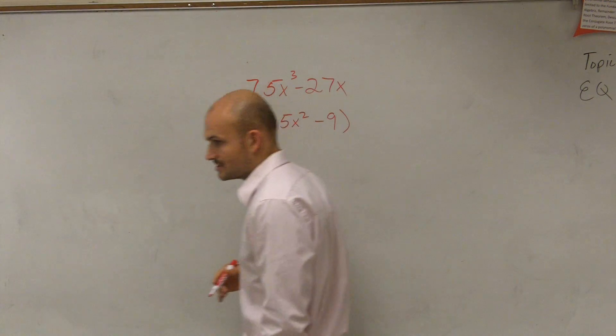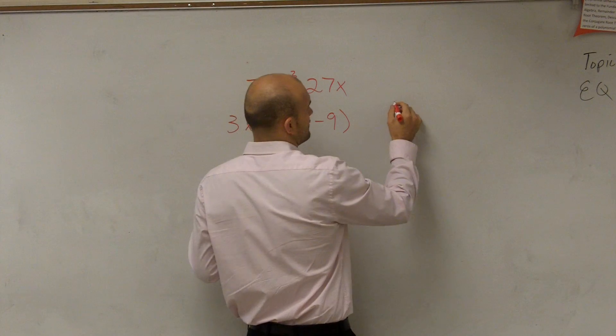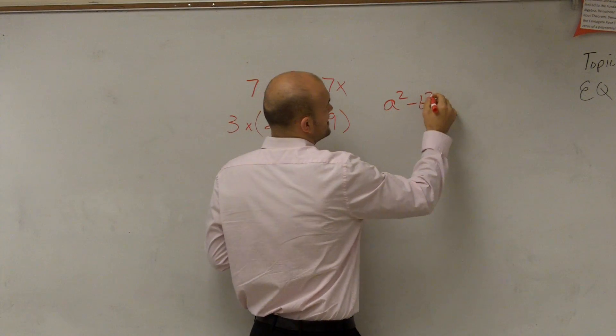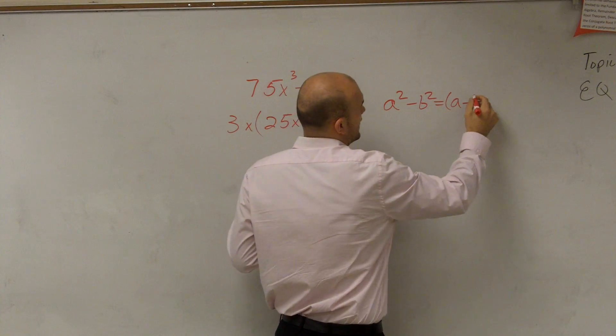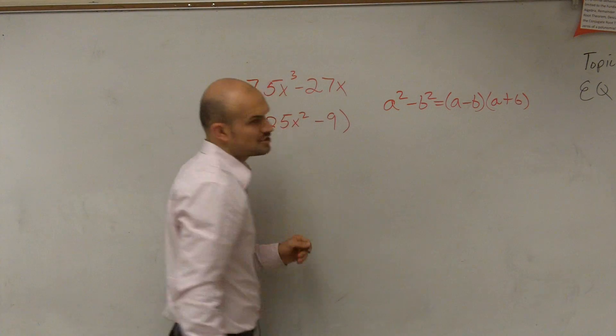So the difference of two squares, if you guys remember, was stated that if you had a² - b², that equaled (a - b)(a + b).